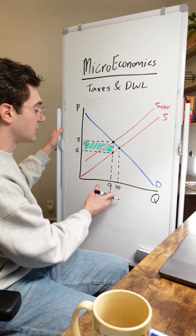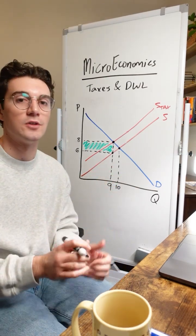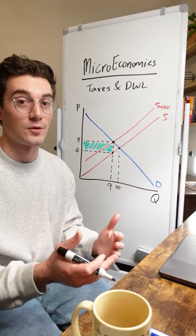Whenever government intervention causes a restriction in market output, it's going to cause deadweight loss. In other words, a manipulation to surplus, or I should say an evaporation of surplus.